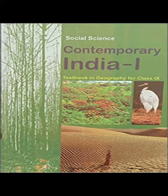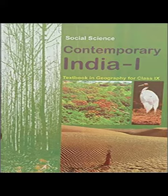Tropical Deciduous Forests are the most widespread forests of India. They are also called the monsoon forests and spread over the region receiving rainfall between 200 centimetres and 70 centimetres. Trees of this forest type shed their leaves for about 6 to 8 weeks in dry summer. On the basis of the availability of water, these forests are further divided into moist and dry deciduous. The moist deciduous forests are found in areas receiving rainfall between 200 and 100 centimetres, mostly in the eastern part of the country, northeastern states, along the foothills of the Himalayas, Jharkhand, West Odisha and Chhattisgarh, and on the eastern slopes of the Western Ghats.